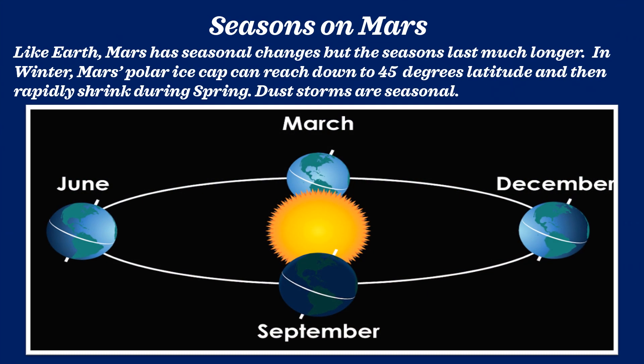Now let's talk about the seasons on Mars. Like Earth, Mars has seasonal changes, but the seasons last much longer. In winter, Mars' polar ice cap can reach down to 45 degrees latitude, and then rapidly shrink during spring. Dust storms are also seasonal on Mars.